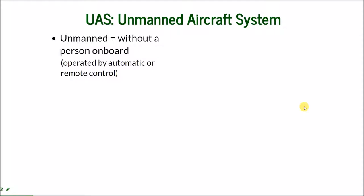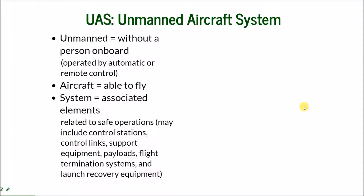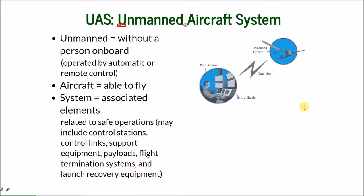So what is the whole UAS? The whole system means it is unmanned — there is no person on board the aircraft — but it does not fly by itself; it is operated by automatic or remote control. It is an aircraft that flies in the air, and it is a system, meaning it consists of many elements. The main essential elements are the control station responsible for vehicle operation, the vehicle itself, and the connection between them.